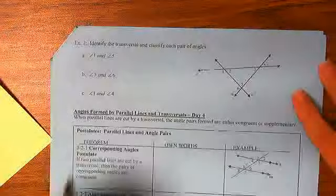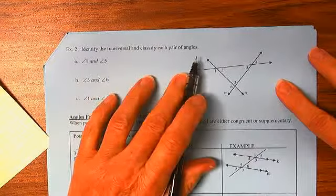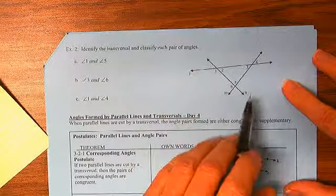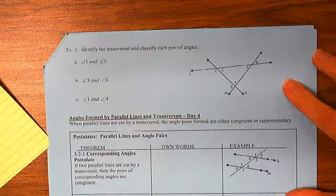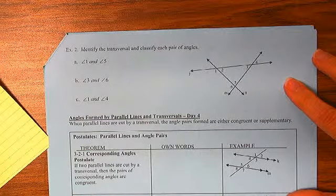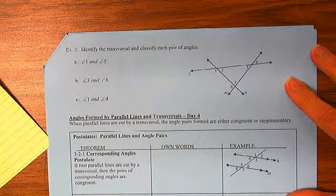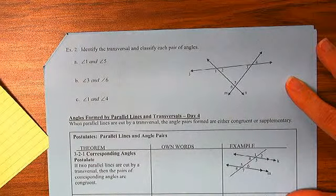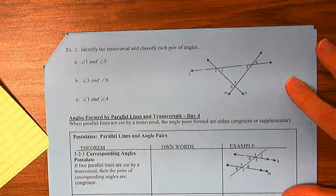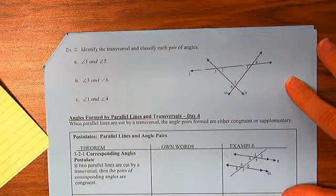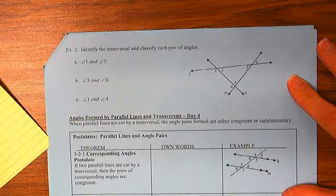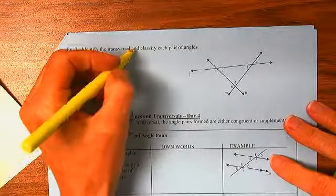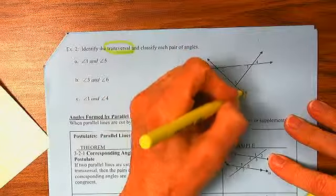Finally, we have identify the transversal and classify each pair of angles. Well, let me see. We have two lines cut by a transversal. So we could either talk about J and M with N as the transversal, or we could talk about M and N with J as the transversal. So since we get to identify, this time I think we will call the transversal N.